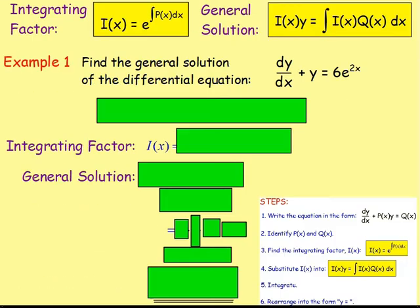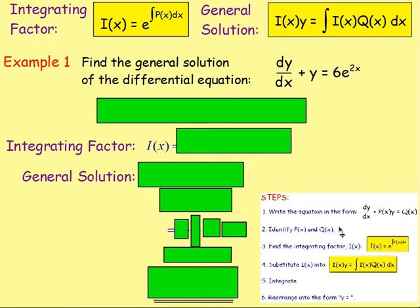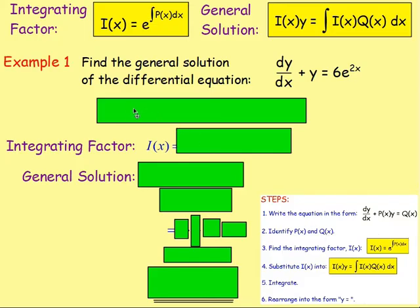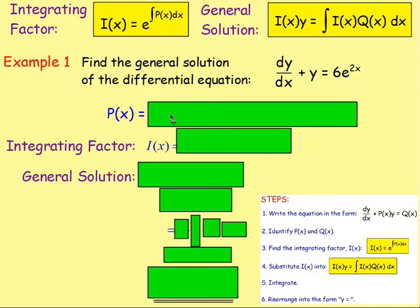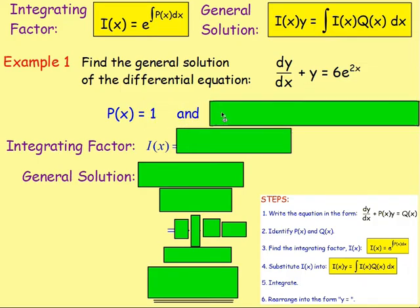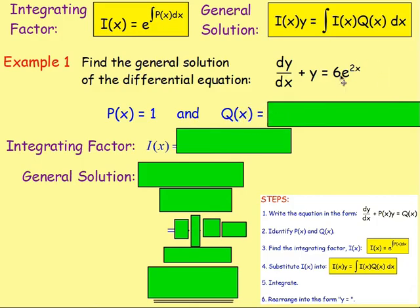So let's try an example. Example one: find the general solution of the differential equation dy/dx plus y equals 6e to the power of 2x. The first thing we notice is the equation starts off with dy/dx — it's a first-order differential equation, there's nothing in front of dy/dx, so we don't have to rearrange it. So the first thing we can do is get P(x) and Q(x). P(x) is whatever we are multiplying y by — it's just 1, it's 1y. And Q(x) — that's just the right-hand side, so that will be 6e to the power of 2x.